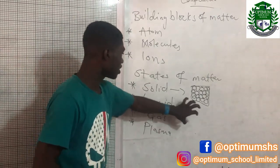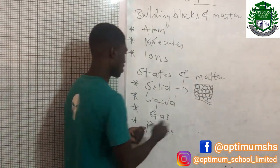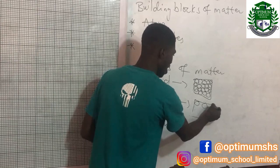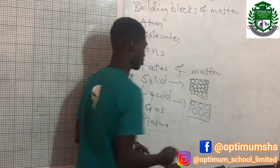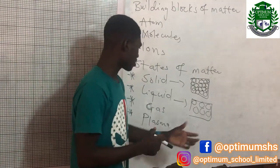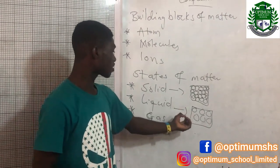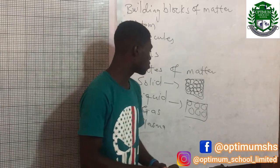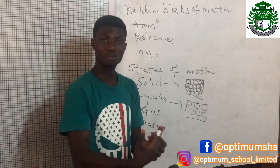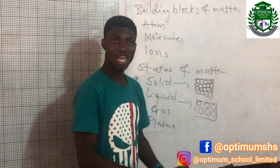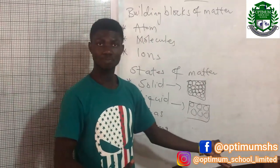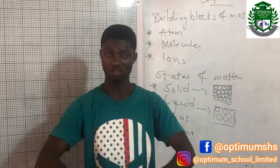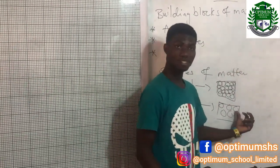Now let's look at the arrangement of particles in a liquid. This one will have some spaces around them, which tells us that they are not as closely packed. Because of the spaces in between the molecules, liquid particles are able to move over each other. This is why liquids are able to flow — because there are spaces between the particles, and the molecules are able to move past each other.